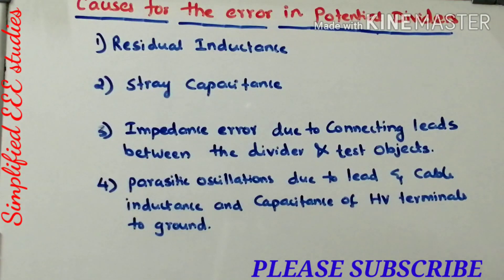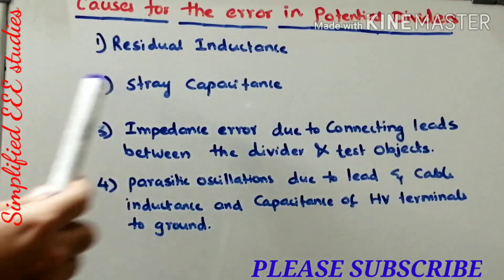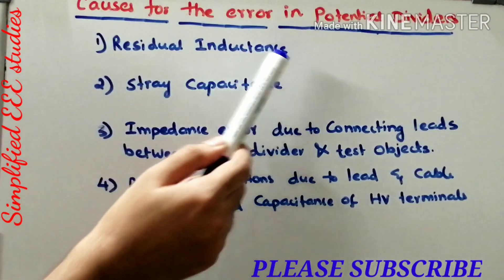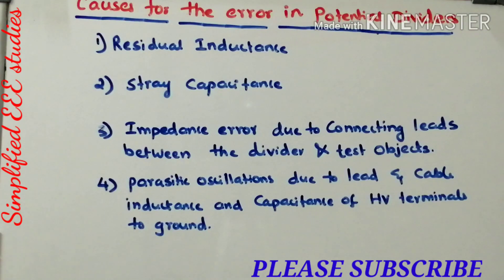As you can see, there are four major reasons which will be causing error in potential divider. The first reason is residual inductance. Residual inductance is not desirable for any type of measurement.